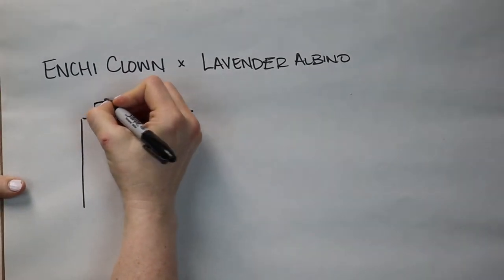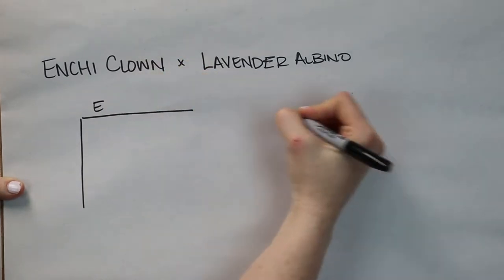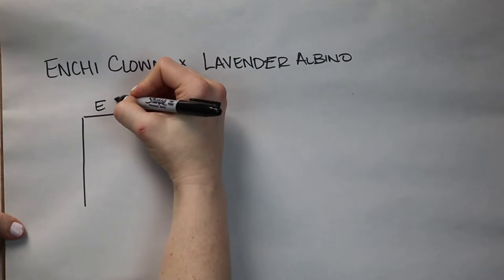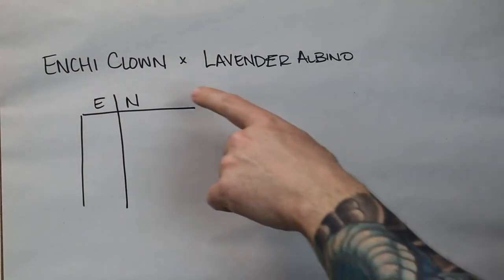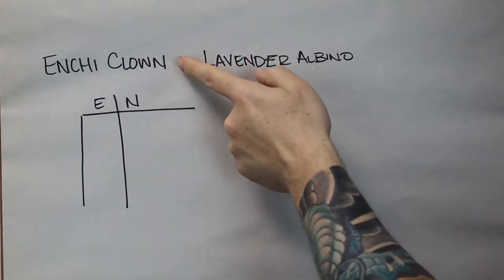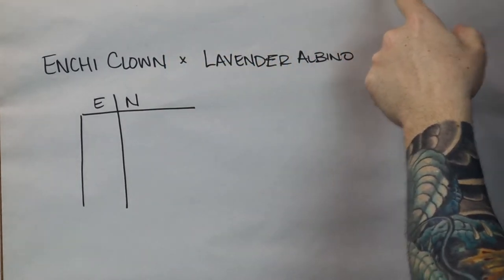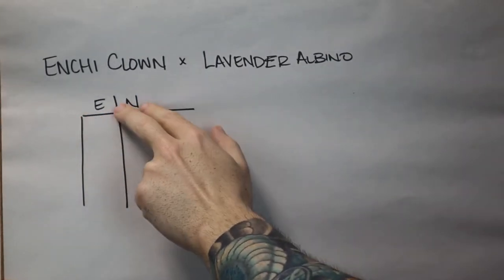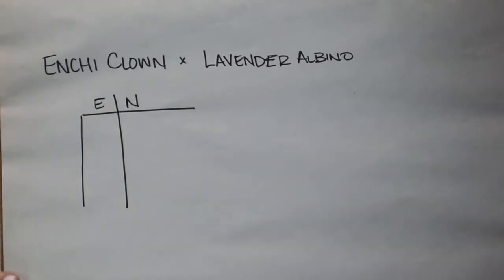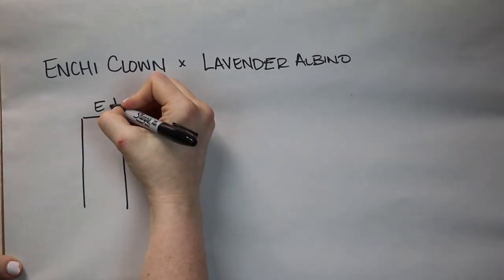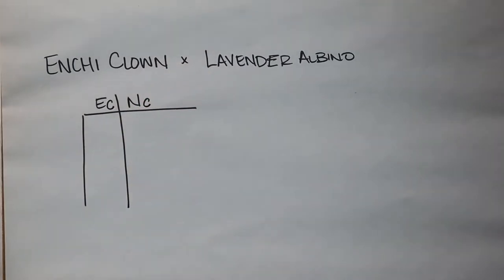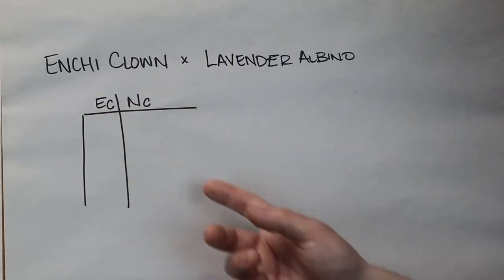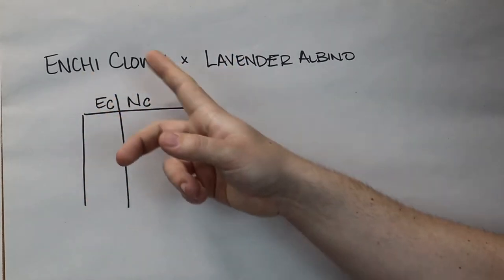The top will be our enchi clown — enchi and then normal. Now for clown: if you breed a visual clown to a normal, everything is going to be het clown. So everything we have here is going to end up being het clown. Put a small 'c' next to the 'E' and a small 'c' next to the 'N.' Those are our only two options from this pairing — either an enchi het clown or a normal het clown.